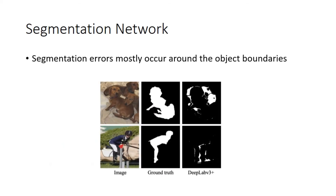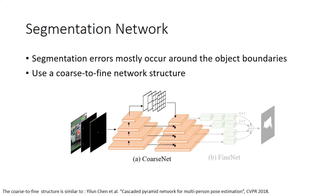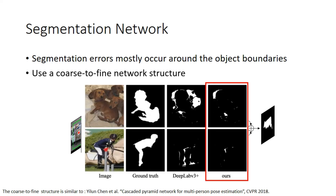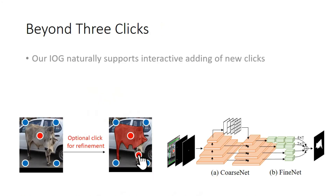Before we discuss the details of our segmentation network, we first notice that even with our IOG, segmentation errors most often occur along the object boundaries. To overcome this, we propose a coarse-to-fine segmentation network consisting of two sub-networks: a coarse-net that applies an FPN-like design with a PSP module for capturing global context, and a fine-net that employs a multi-scale fusion structure for detail refinement. With this coarse-to-fine structure, segmentation errors along the boundary can be largely eliminated.